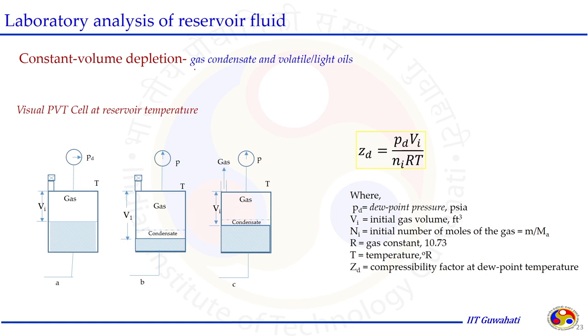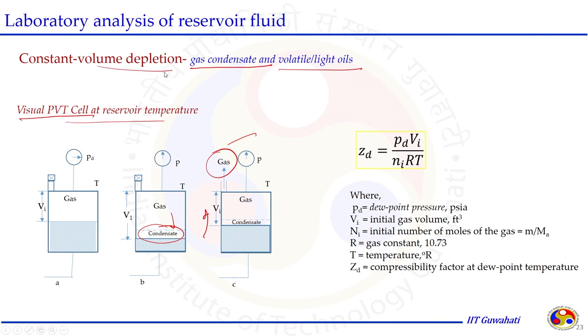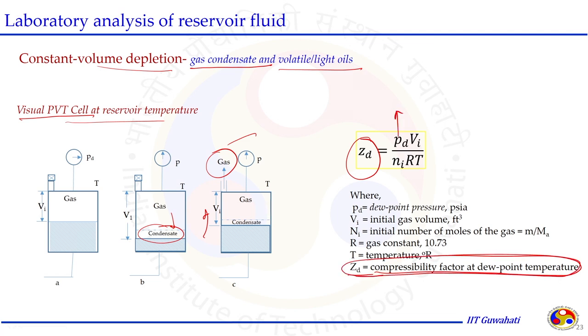The constant volume depletion (CVD) test is performed for gas condensate or very light crude oil systems. In the visual PVT cell at reservoir conditions, pressure is changed and due to retrograde behavior some gas components condense out. The condensate is repressurized, gas is collected, and the process is repeated. This test yields the Z-factor at dew point (Zd) and provides understanding of how phase changes occur when fluid is subjected to different pressure regimes at constant volume.